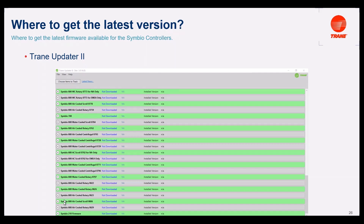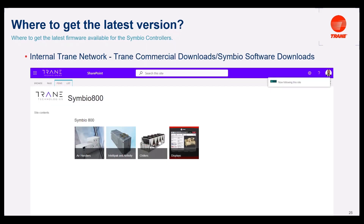In Trane Updater, you can download the same versions for Chillers, IntelliPacks, and the programmable for the 800. Also, you can download here for the 700, 210, and in the next few weeks, also for the 500. Going back to our internal Trane network, here you can also download for the 700, 210, and in the next weeks for the 500.